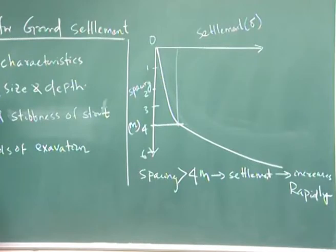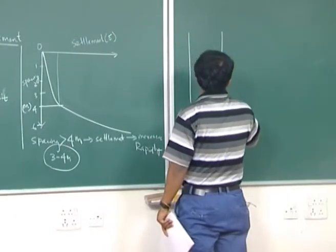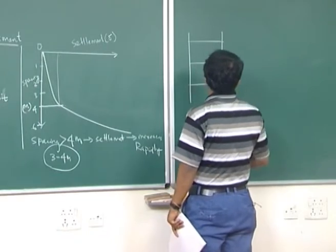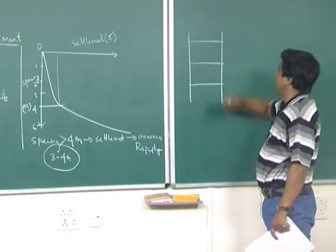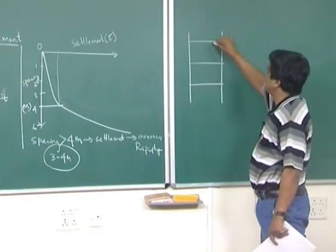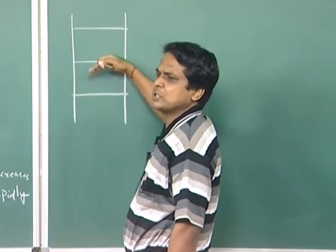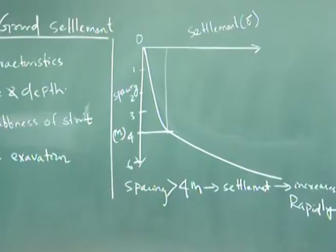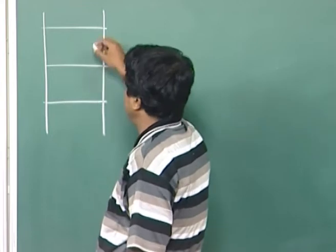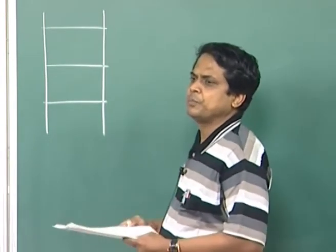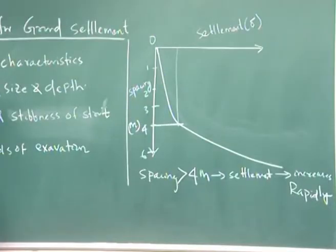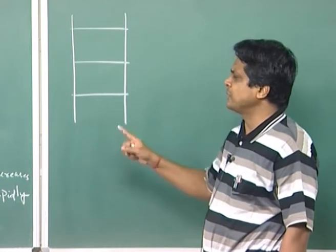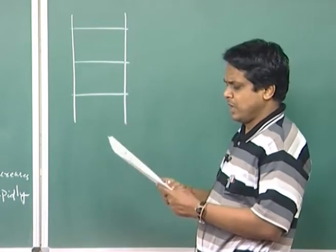Stiffness of the strut determines what spacing should be used. These are the struts — they hold the wall in vertical position. How rigid the strut is depends upon what is your spacing between the struts. Particularly for Calcutta metro, they found from experimental investigation that if the spacing is kept between 3 to 4 meters, there is less chance of lateral movement of the wall. These are all case studies; it may vary — this is only for Calcutta soil. For Delhi metro, this will be a different case study. It all depends upon type and stiffness of the strut, which indirectly depends upon the spacing.